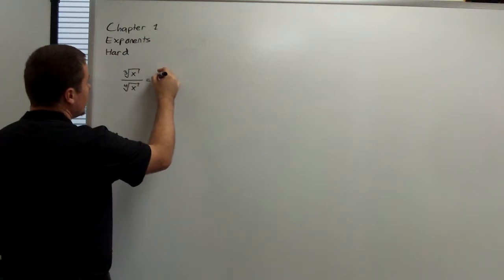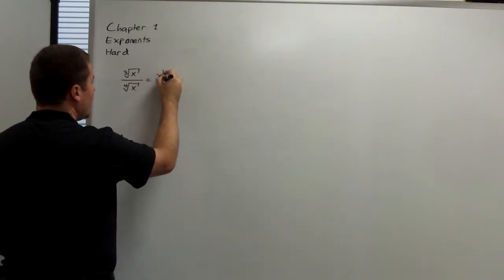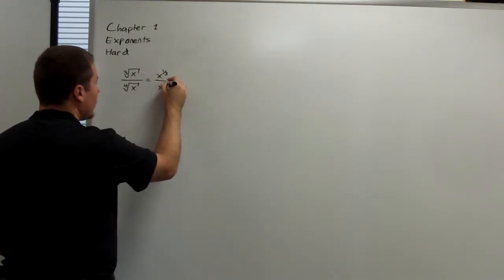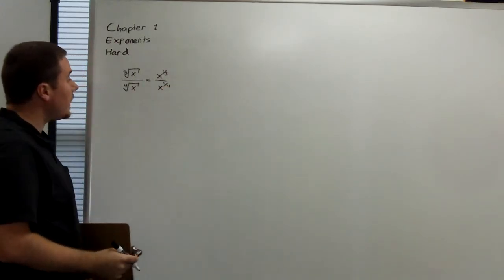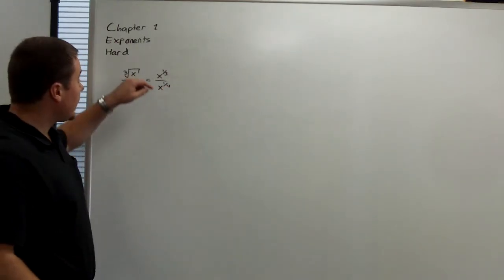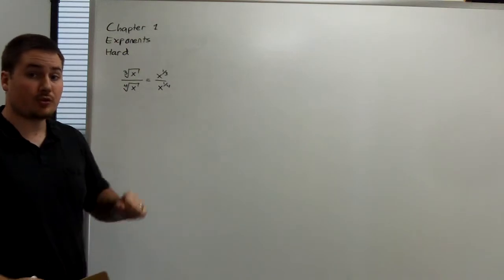This is equal to x to the one-third over x to the one-fourth. Now, if you know your exponent rules, you know that to get from the top to the bottom, we subtract.